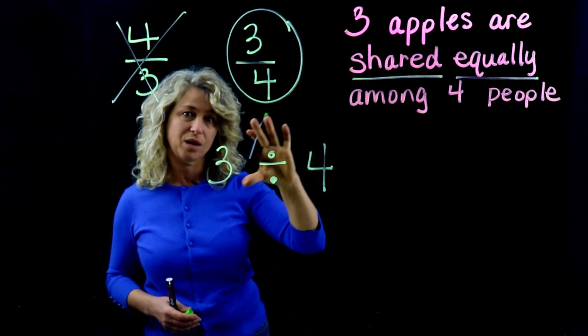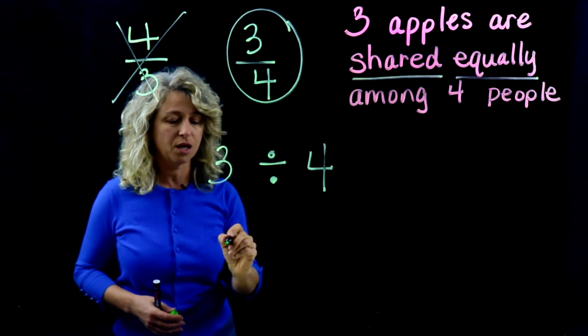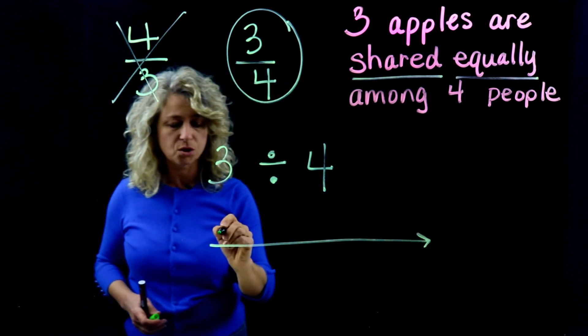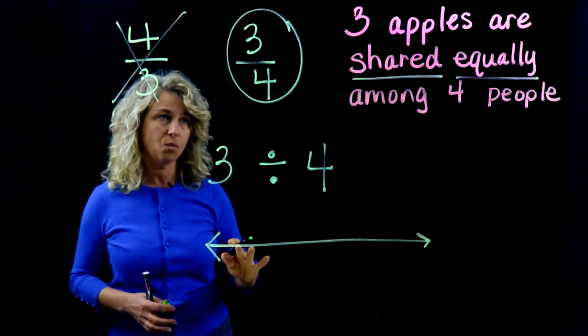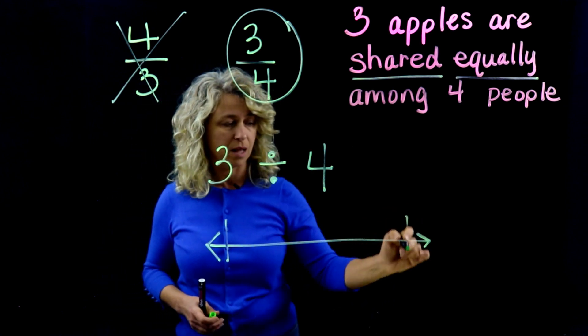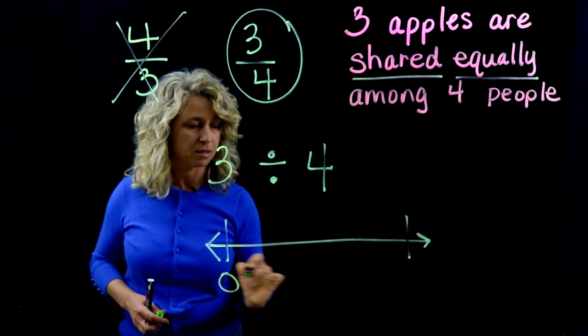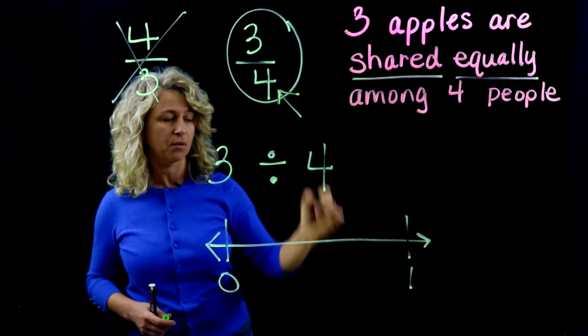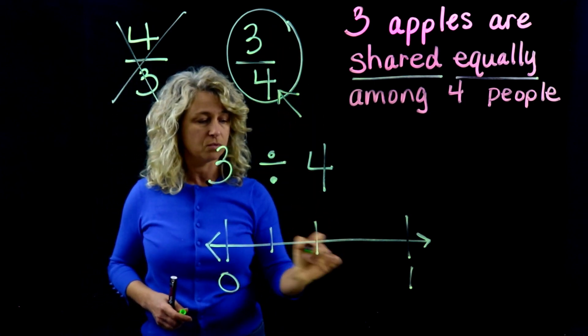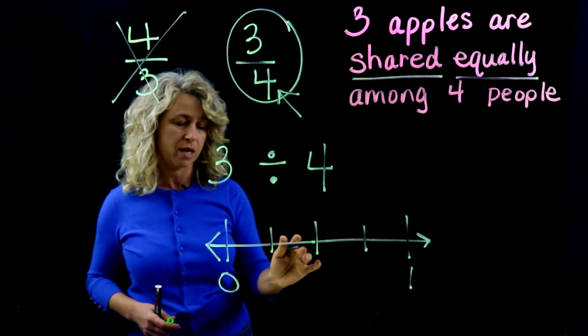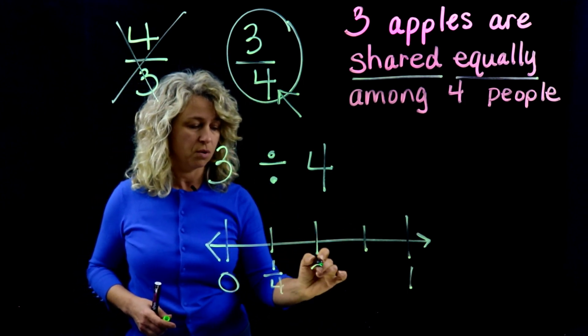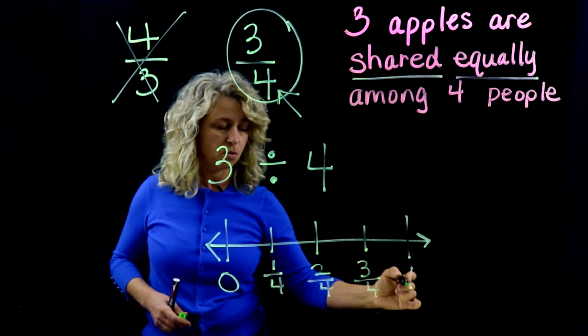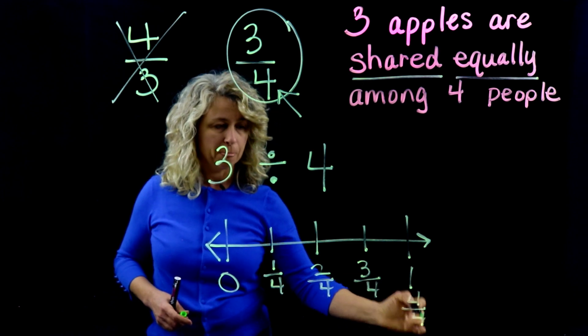Okay, so if we wanted to look at this on a number line and just show where would this actually lie on the number line, let's look at what it would look like. We know that three-fourths, four is your denominator, so let's draw a number line with four equal sections: one-fourth, two-fourths, three-fourths, and of course one whole is the same as four-fourths.